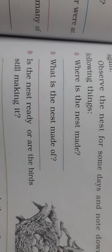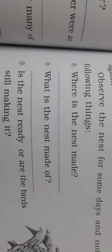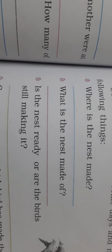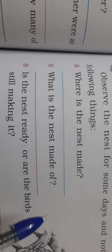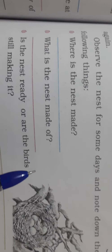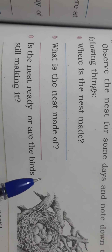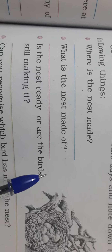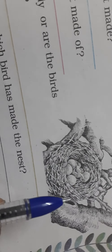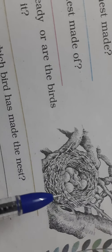The nest I observed was built on top of a wooden support inside a house — it was high up. What is the nest made of? It was mostly made of twigs, with just one or two pieces of cloth. As you can see, there are many twigs — it was nicely shaped, though not perfectly so — just twigs placed together.